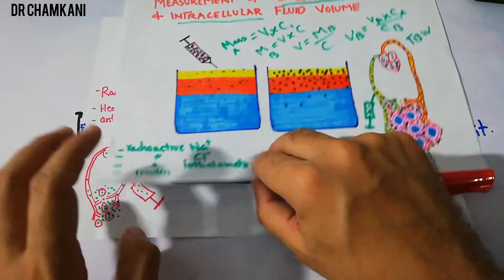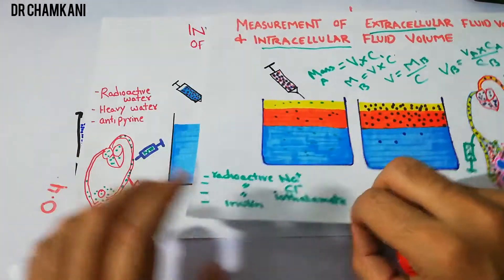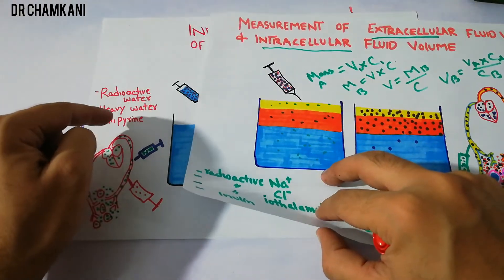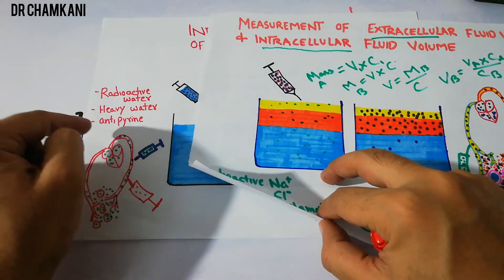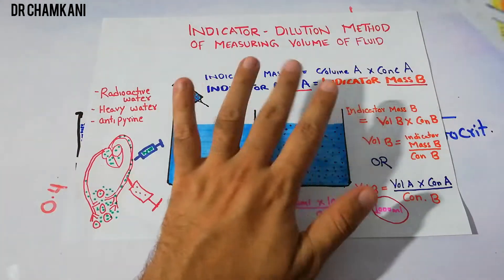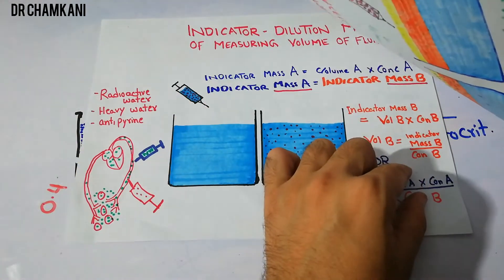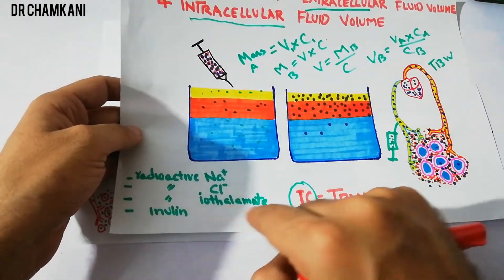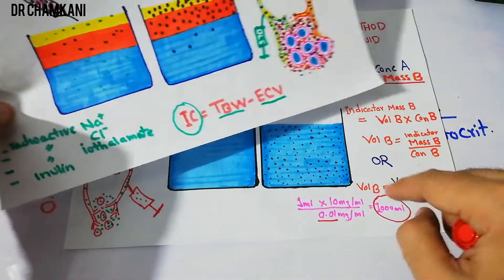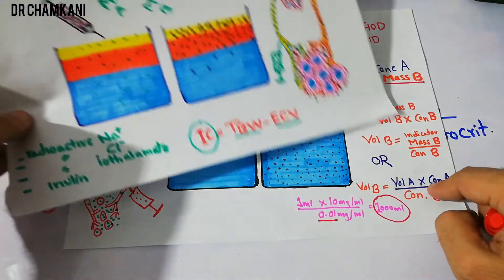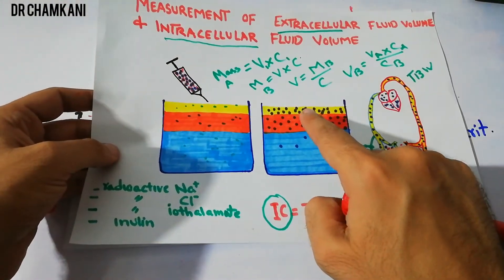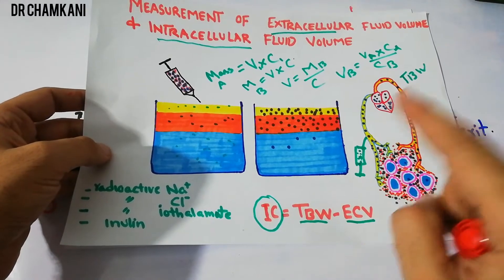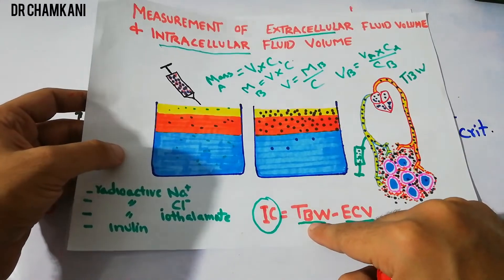Depending on the indicator, we can measure different fluid volumes. Using radioactive water, heavy water, or antipyrin with the indicator dilution equation gives total body volume. Using sodium chloride, radioactive sodium, radioactive chloride, radioactive iothalamate, or inulin gives extracellular fluid volume. By subtracting extracellular fluid from total body water, we can calculate intracellular fluid as well.